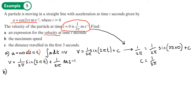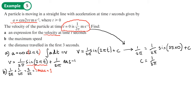For part b, the maximum speed: since we have a sine function, it cycles up and down. The maximum value of sine is 1, so the maximum of (1/(2π)) sin(2πt) is 1/(2π). Therefore the maximum of the whole expression is 1/(2π) + 1/(2π) = 2/(2π), which simplifies to 1/π. That is our maximum velocity, v_max.